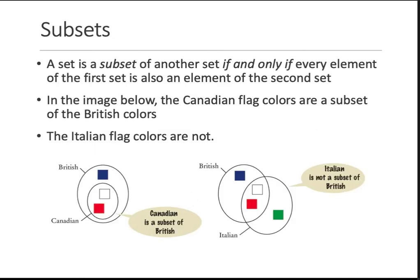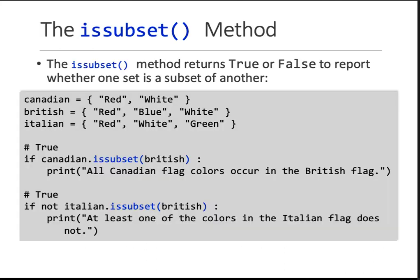Then subsets, just like elementary math, sets can have subsets. So the Canadian flag is a subset of the British flag because it has only two colors. British has three. Similarly, you can have overlaps. You can have unions and so on. So all the elementary math stuff applies. So you can check whether something is a subset of another set, whether it's not a subset. So here it's not a subset. There is some common elements, but it's not a complete subset. So what's the method? Method is is_subset.